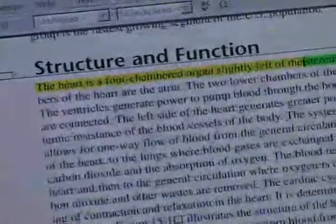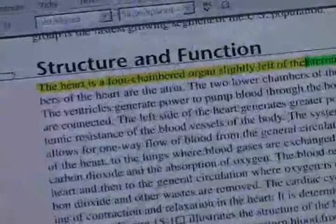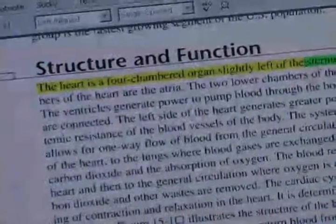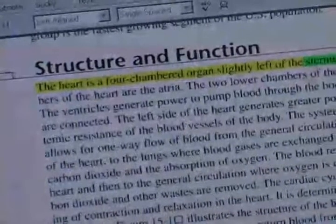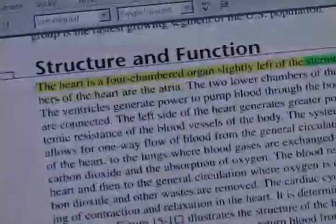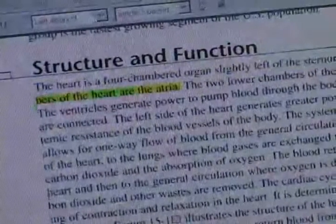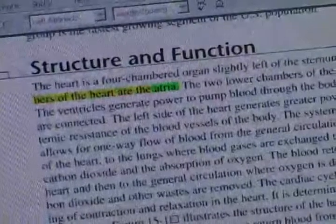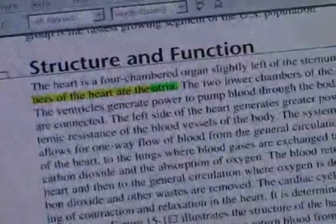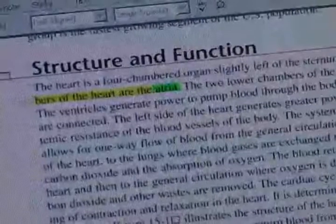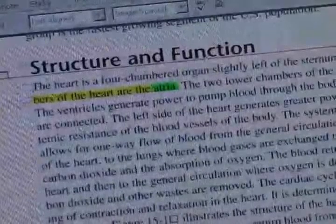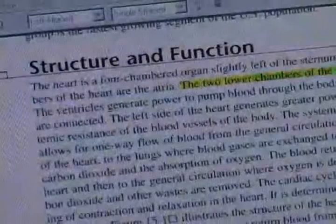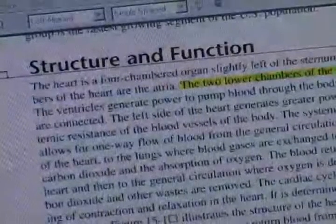That's a little bit too fast, so I'm going to slow it down to about 120 words a minute. Sternum. The two upper chambers of the heart are the atria. If I don't like the voice, I can change it to another voice like Kate. Atria. The two lower chambers of the heart are the ventricles.